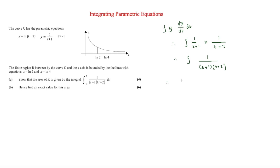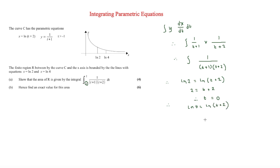For the lower limit: ln 2 equals ln(t plus 2), so the ln's cancel and 2 equals t plus 2, giving t equals 0. For the upper limit: ln 4 equals ln(t plus 2), so 4 equals t plus 2, giving t equals 2. So the limits in t are 0 and 2.